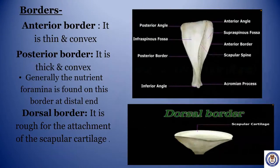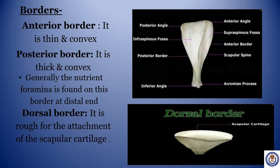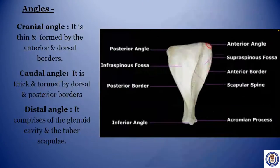Borders. Anterior border: it is thin and convex. Posterior border: it is thick and convex. Generally, the nutrient foramen is found on this border at the distal end. Dorsal border: it is rough for the attachment of scapular cartilage.